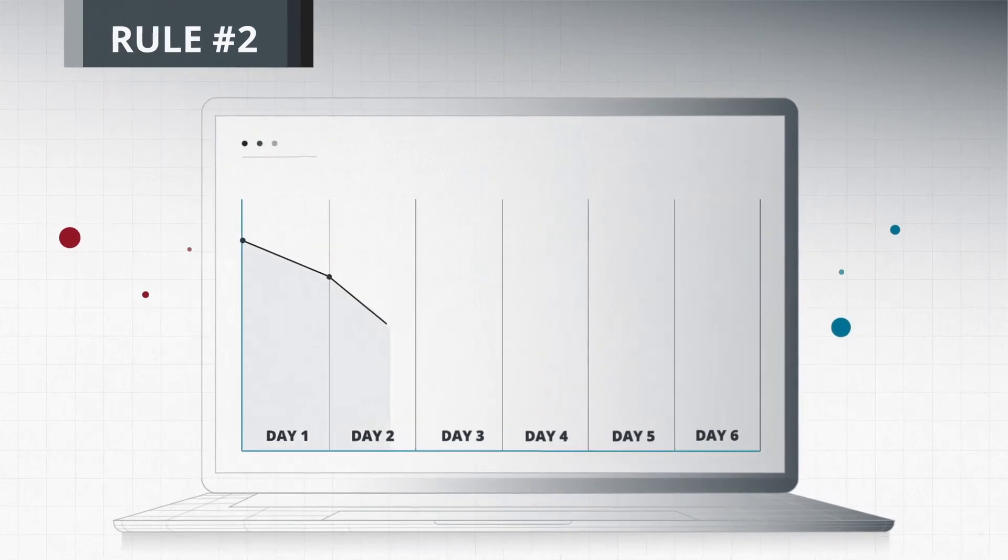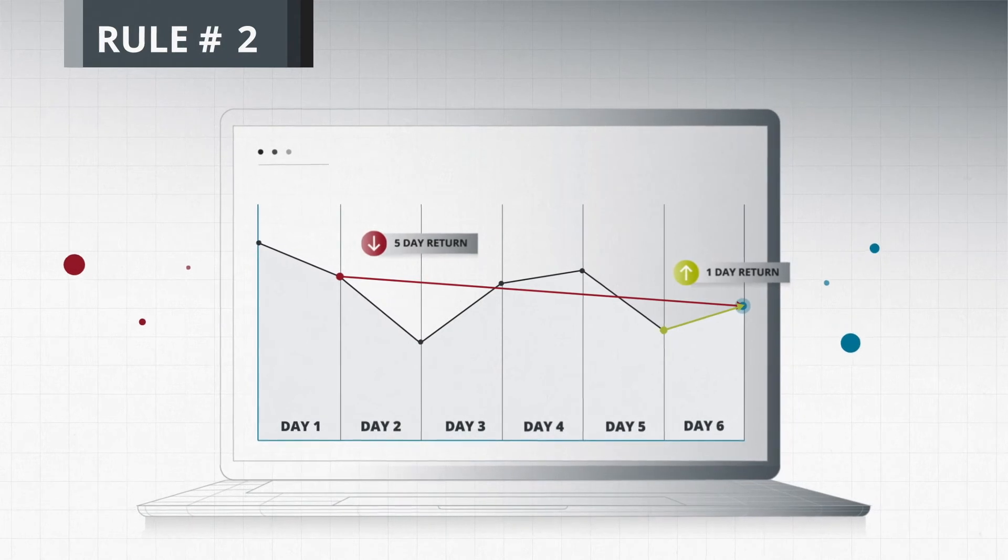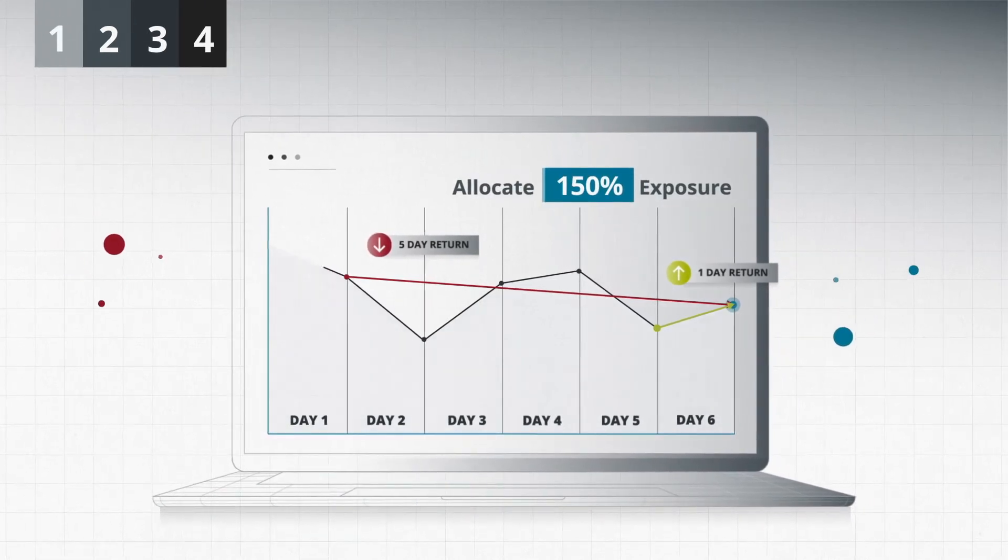Rule 2: If the previous 1-day return is positive and 5-day return is negative, allocate 150% exposure.